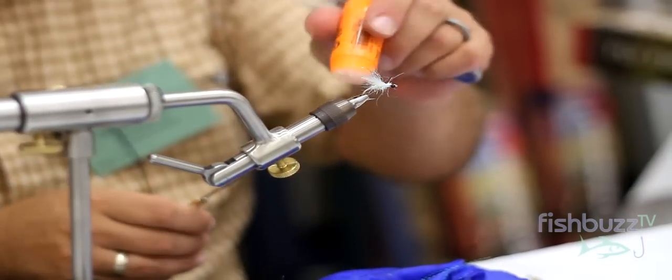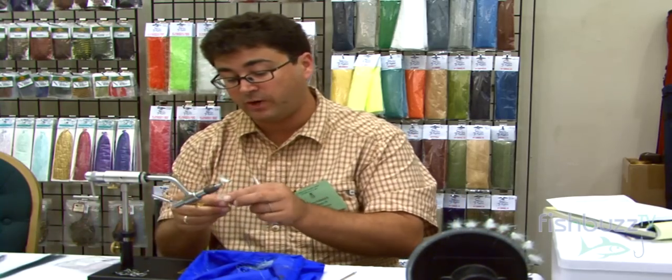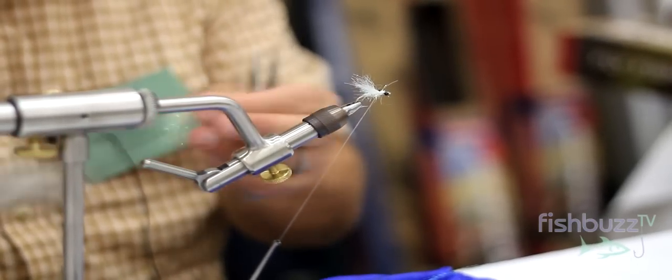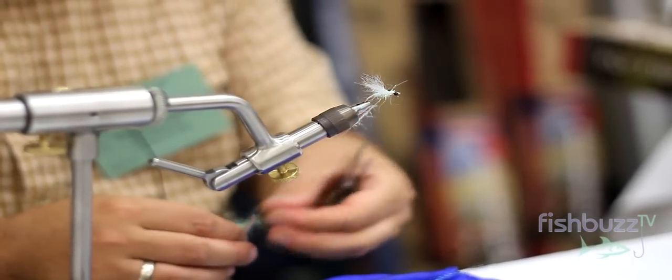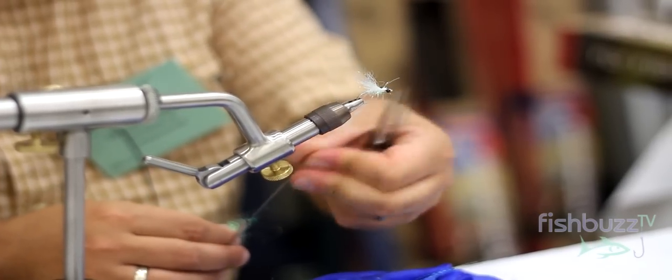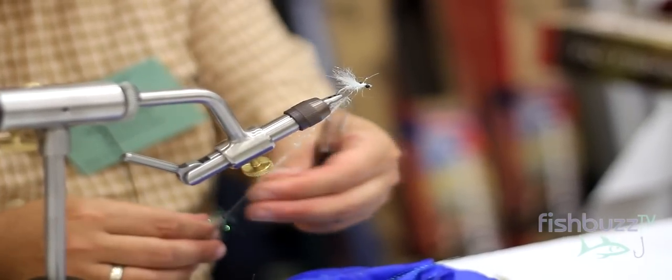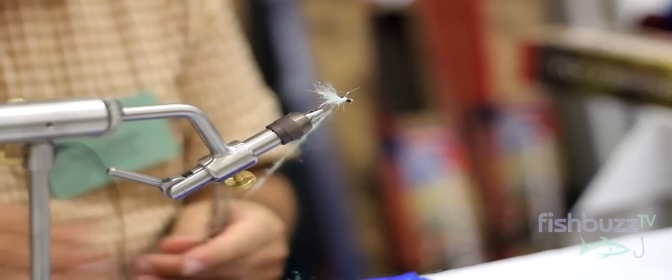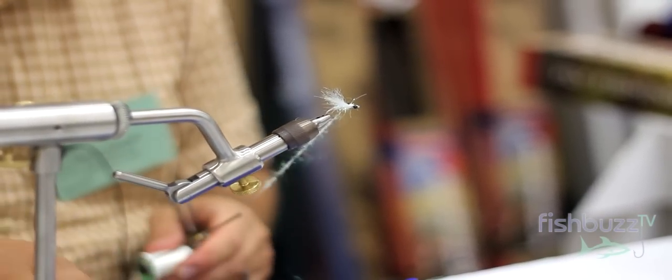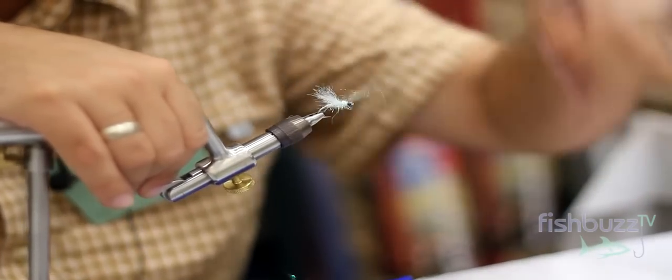Now we're going to go back to our dubbing and just dub a little bit more of the ice dub over the base of the wing and over the eyes. We can go a little bit thicker with this dubbing. We're going to do about a five to six inch strand. We're going to go over the base first and then we're going to do another strand about the same length.